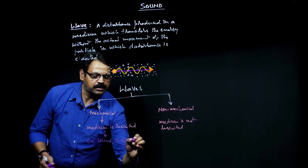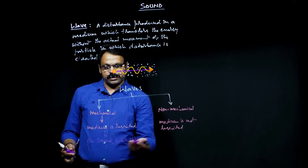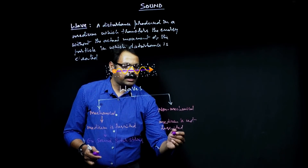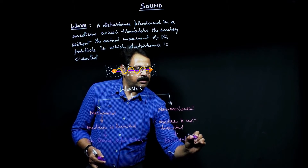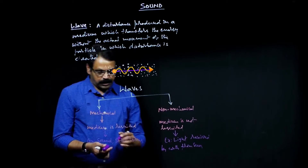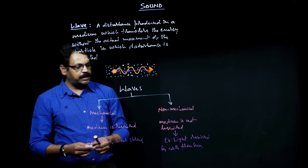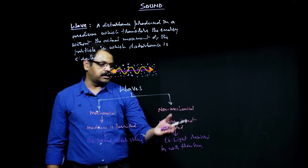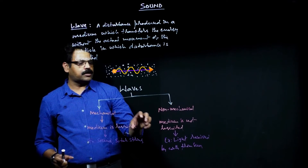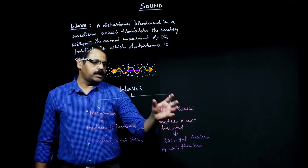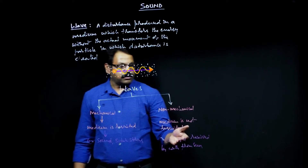Other examples of mechanical waves are vibrations on a sitar string or vibrations on any string — these require a medium. Non-mechanical waves do not require a medium. An example is light received by the Earth from the Sun. From the Sun to the Earth, beyond a certain extent there is no medium, yet light still travels as electromagnetic radiation. A non-mechanical wave is a method of transportation of energy in the form of a wave where medium is not required.